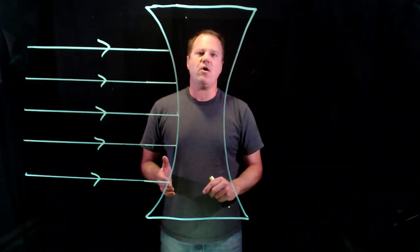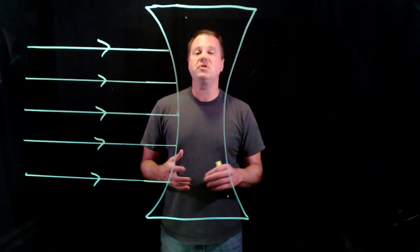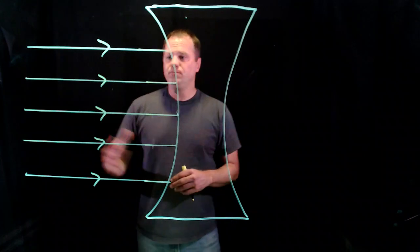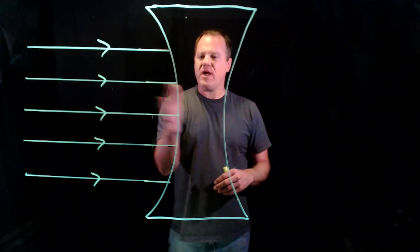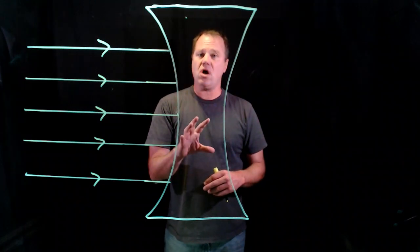Hi, I'm going to show you how a biconcave or diverging lens works and how we define its focal length. So we have five parallel rays coming in and hitting this lens. We're going to use Snell's law to predict what happens to these rays.